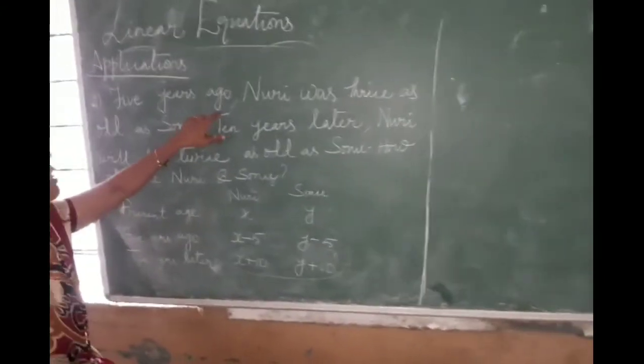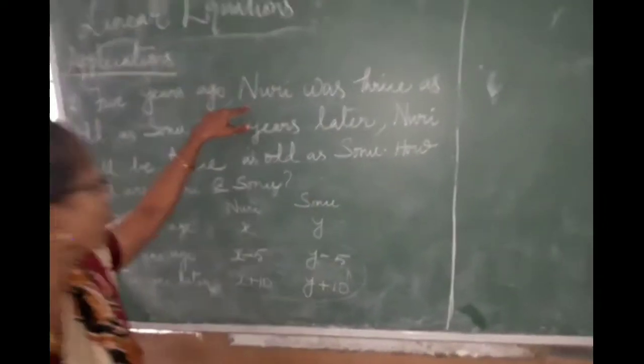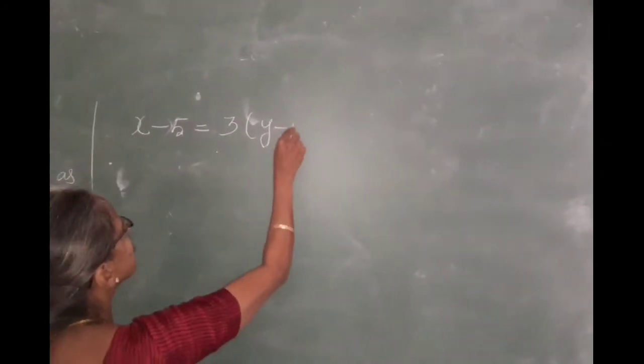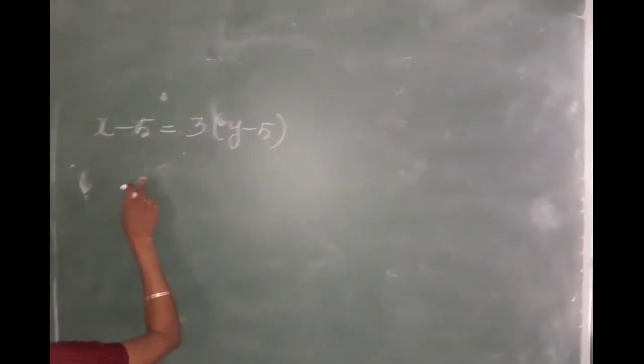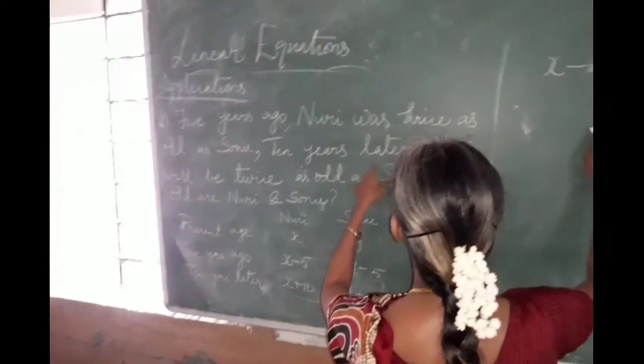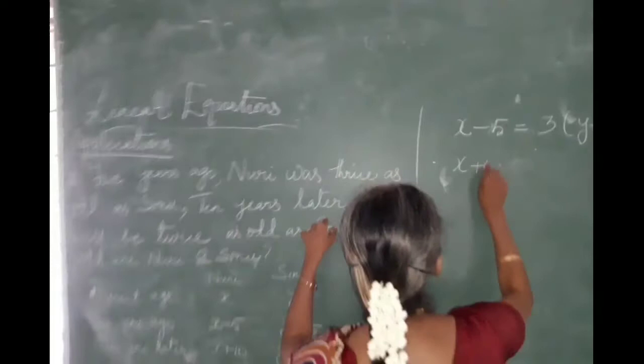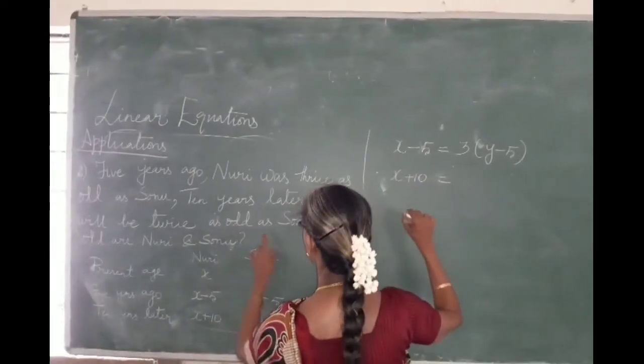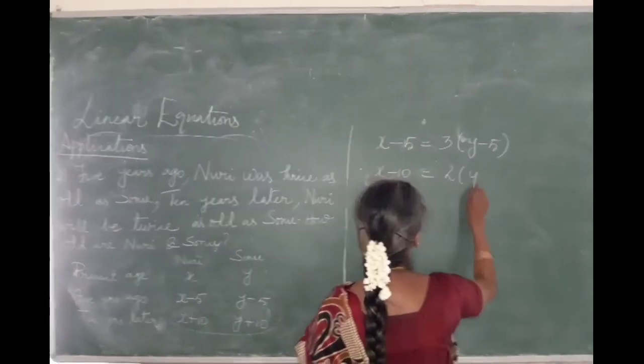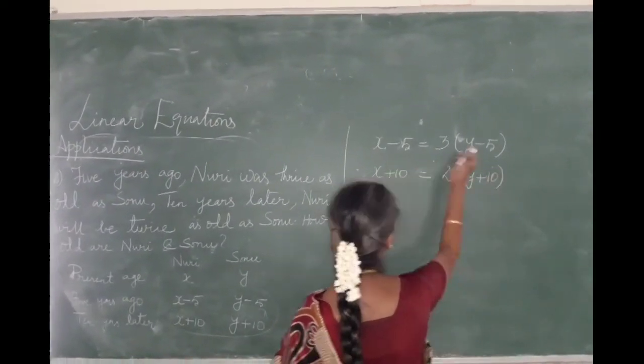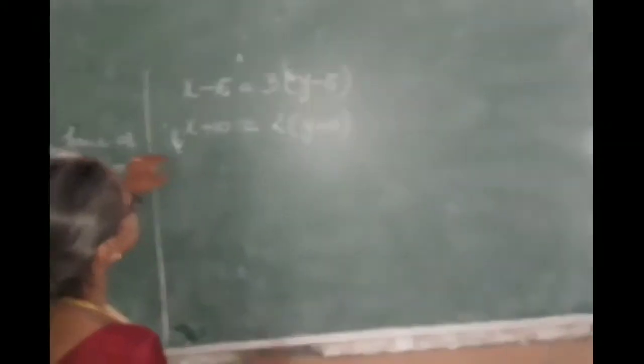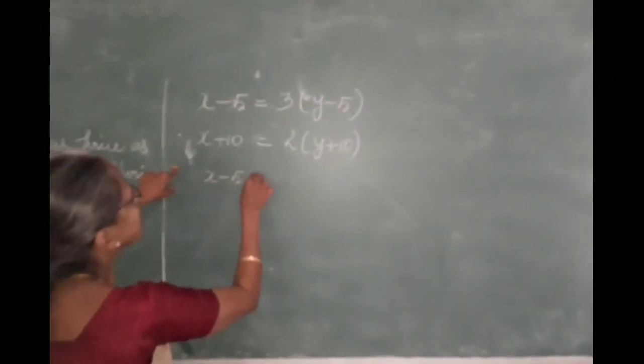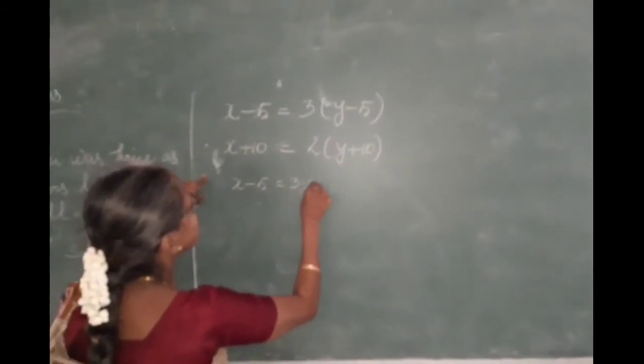For this one, you better substitute the condition what is given. 5 years ago, Noori's age is x minus 5. She was thrice as old as Sonu, so 3 into y minus 5. This is where we are going to apply. Next, 10 years later, Noori will be twice as old as Sonu. So x plus 10 equals 2 into y plus 10. Now we have written the equation and substituted the conditions.